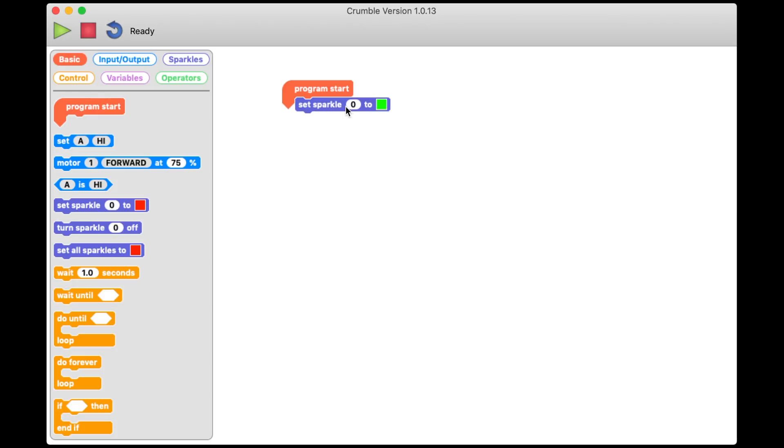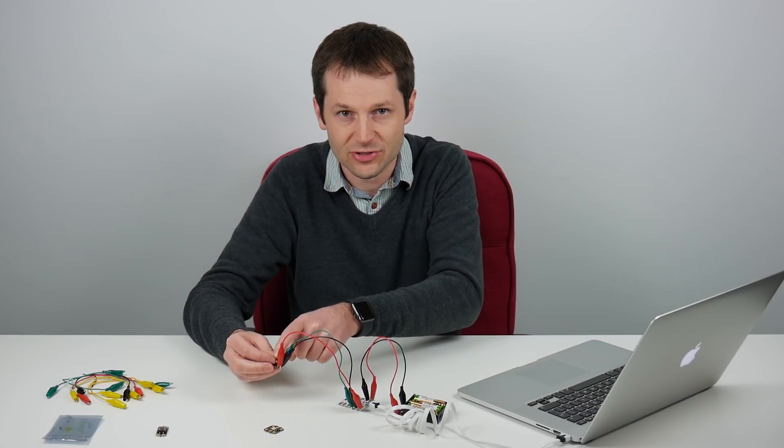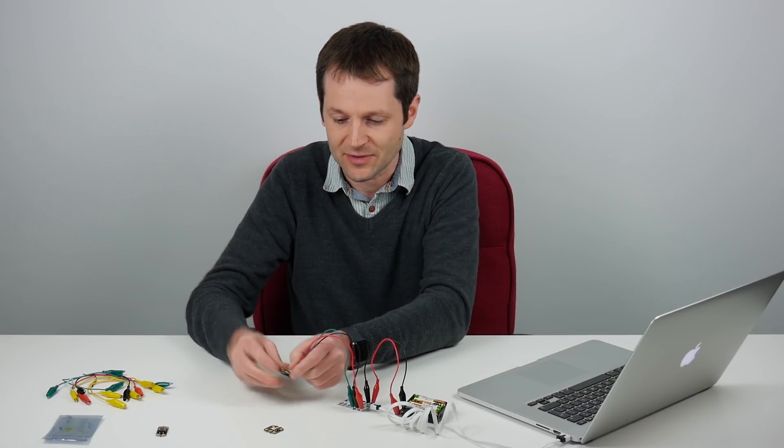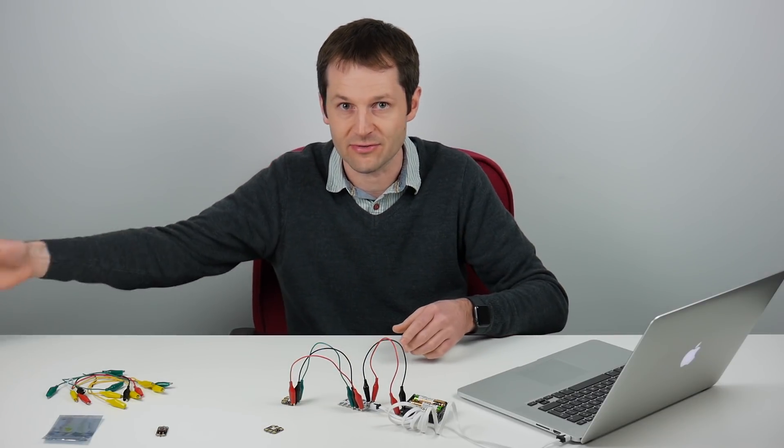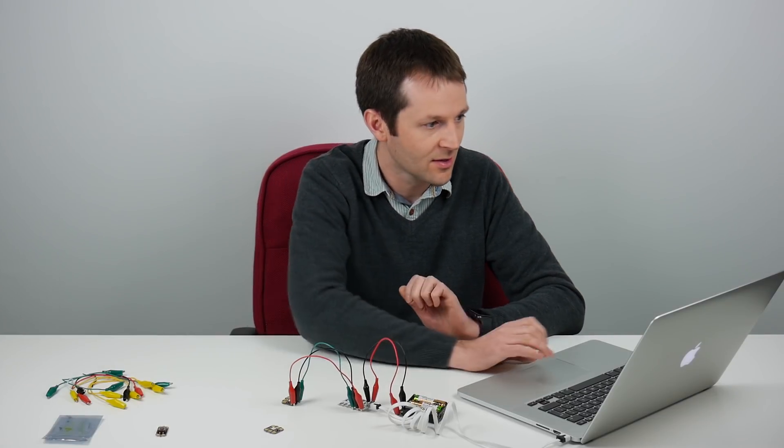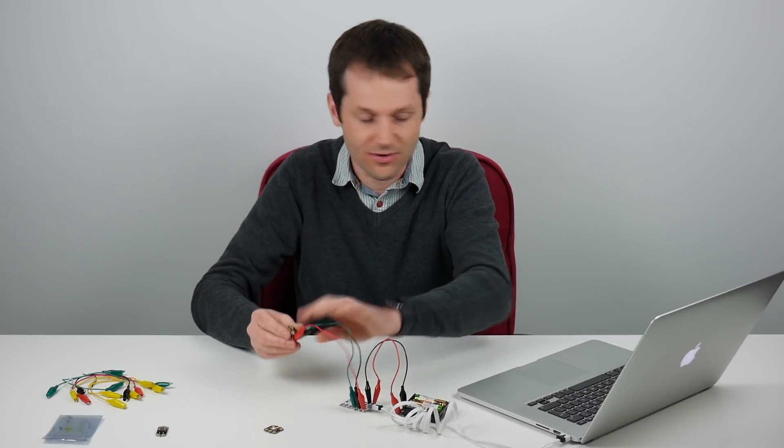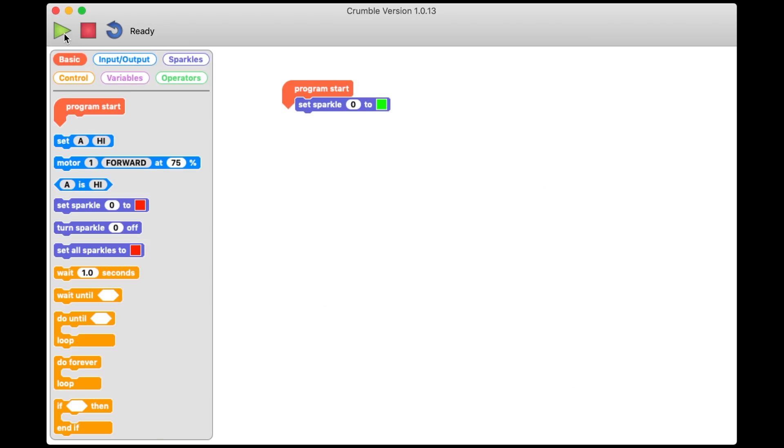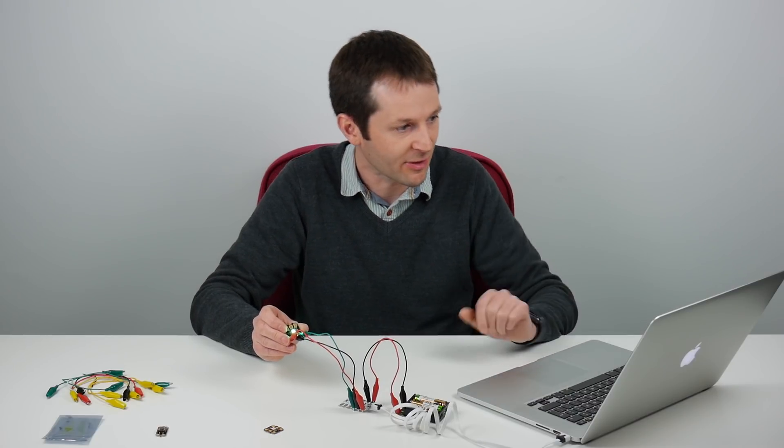Sparkle zero is actually the address of the sparkle. Zero is the first sparkle connected to the Crumble. I can actually connect more sparkles in a chain to this sparkle and they'll become one, two, three, four, etc. You can have them all different colors at different times. If I turn my battery pack on and then run this program by pressing the play button, you can see the sparkle goes green as my program told it to.